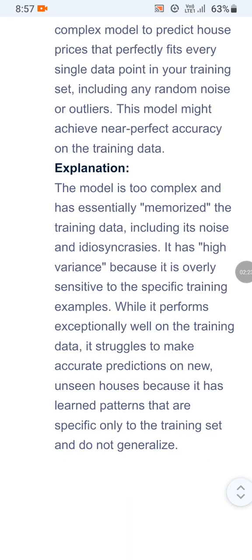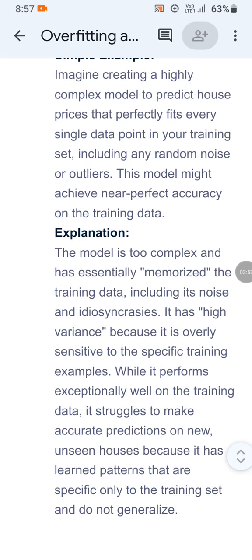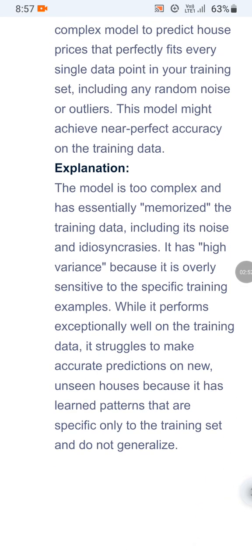The model is too complex and has essentially memorized the training data, including its noise and idiosyncrasies. It has high variance because it is overly sensitive to the specific training examples. While it performs exceptionally well on the training data, it struggles to make accurate predictions on new unseen houses because it has learned patterns specific only to the training set that do not generalize.